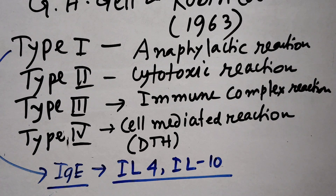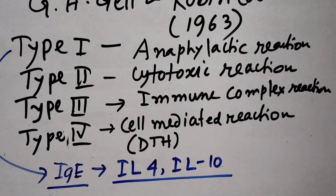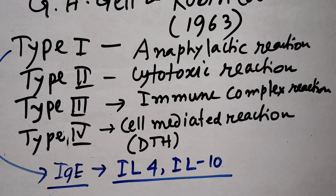Additional mediators released include: eosinophil chemoattractive factor (ECF), neutrophil chemoattractive factor. These are primary factors. Secondary mediators include platelet activating factor, leukotriene, prostaglandin, IL-1 cytokine, and TNF-alpha cytokine.